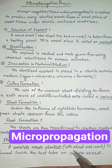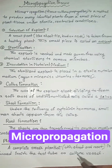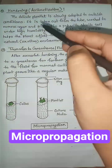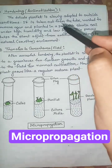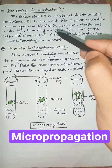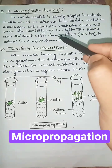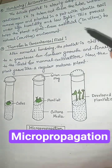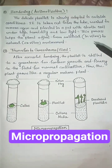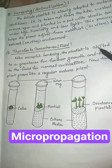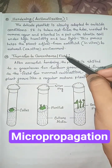Next step is plantlet formation. A complete small plantlet with shoot and root is formed inside the test tube or cultured vessel. Next: hardening or acclimatization. The delicate plantlet is slowly adapted to outside conditions. It is taken out from the tube, washed to remove agar, and planted in a pot with sterile soil under high humidity and low light. This process helps the plant adjust from artificial, that is in vitro, to natural, that is ex vitro, environment.